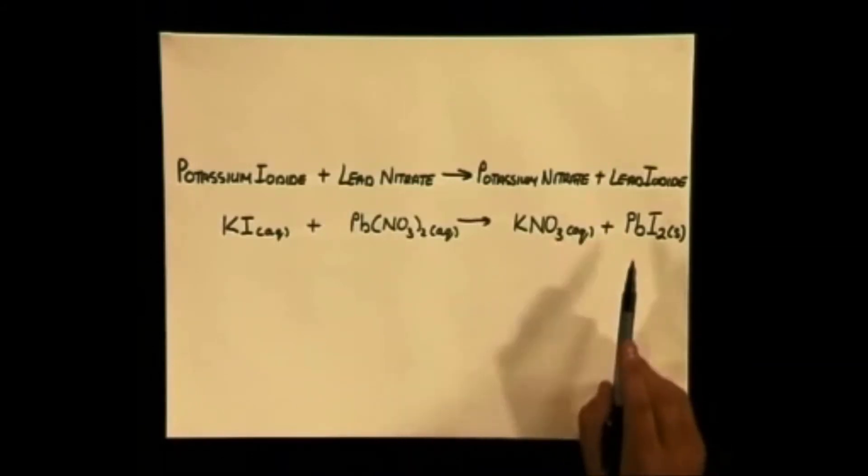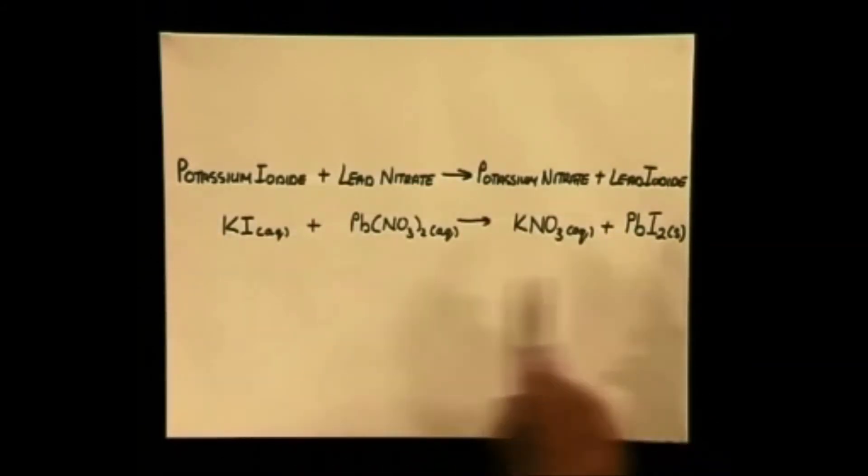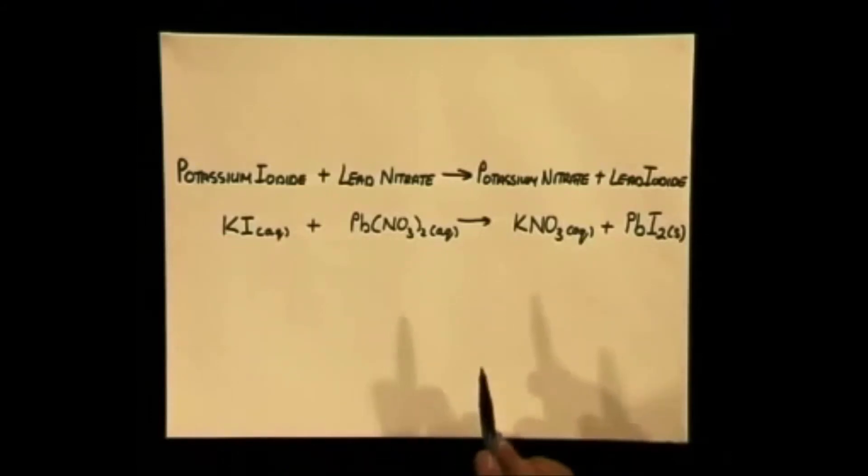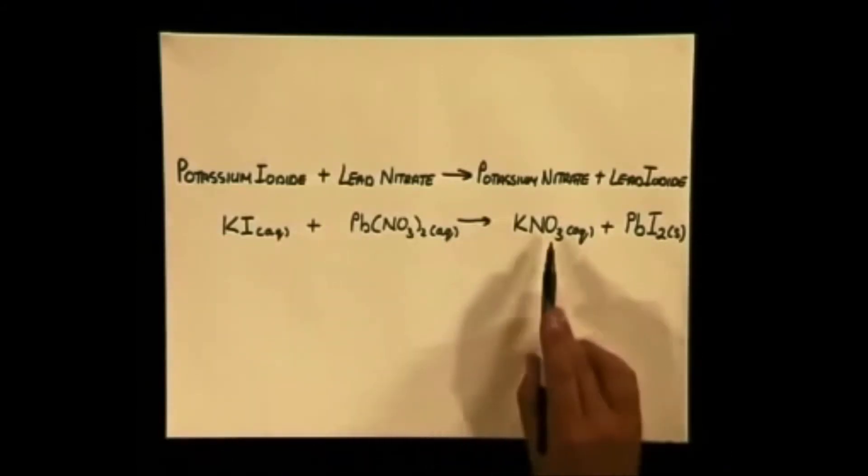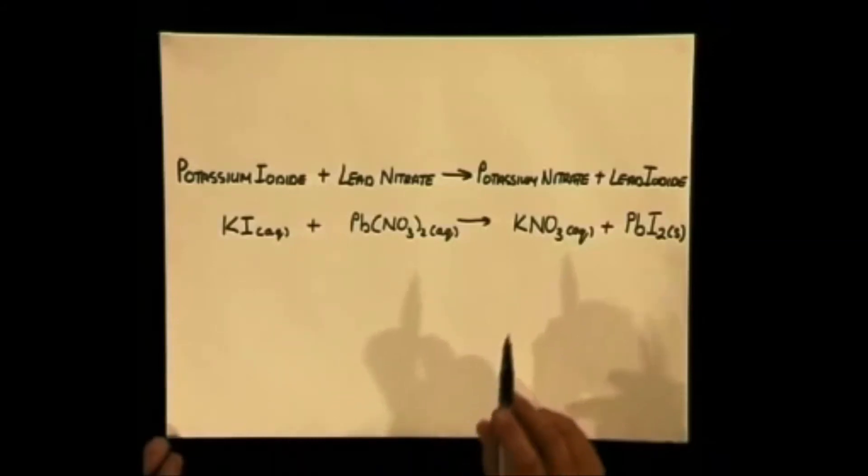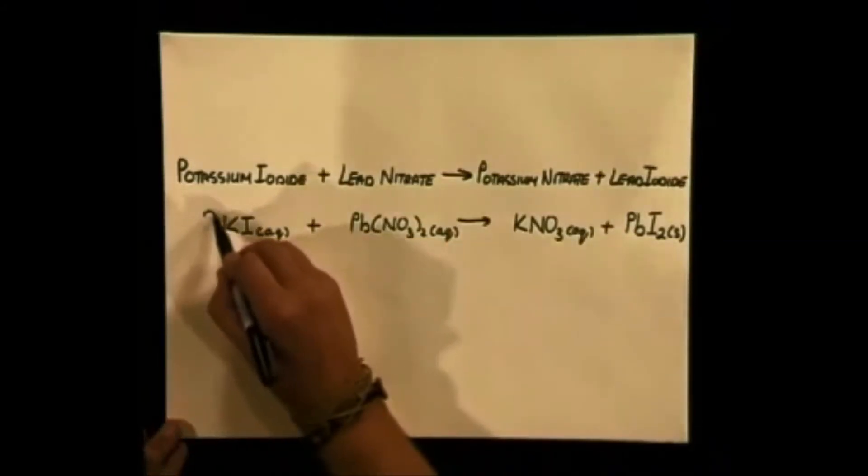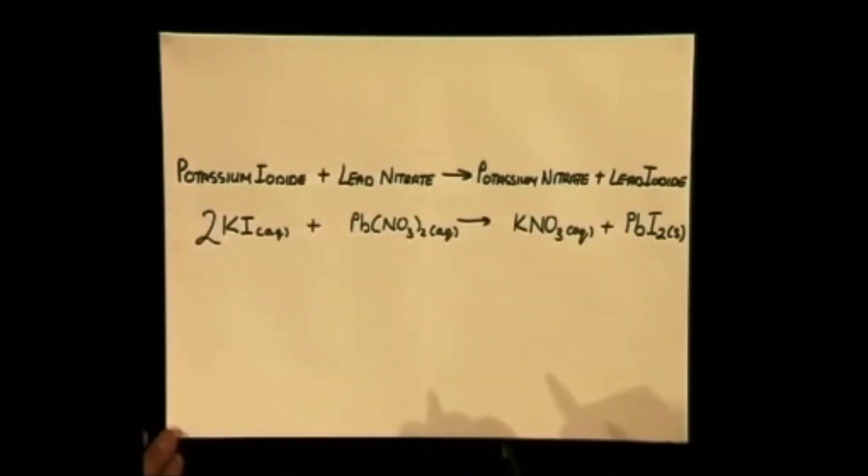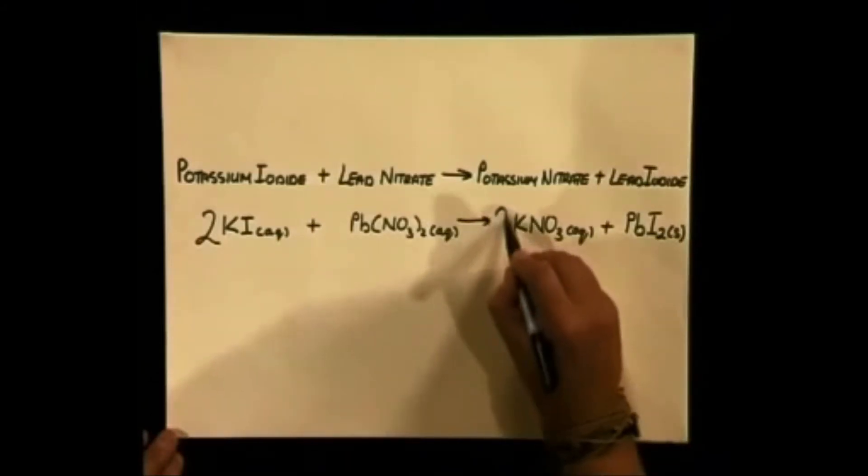In order to balance the equation, I will put a two in front of the potassium iodide at the start and two in front of the potassium nitrate at the end. So the equation now reads: 2KI + Pb(NO3)2 → 2KNO3 + PbI2.